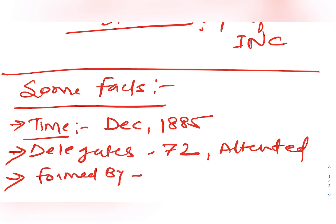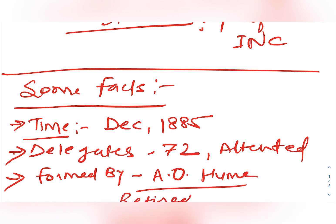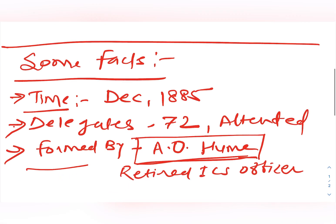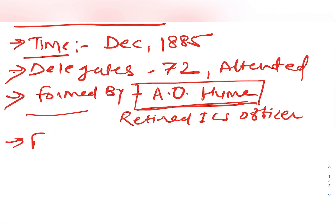Apart from these 72 delegates, one officer named A.O. Hume was also present. He was a retired ICS officer and is mainly considered as the founder of the INC — the Indian National Congress.